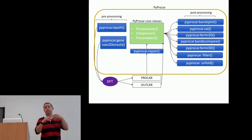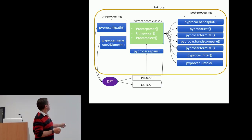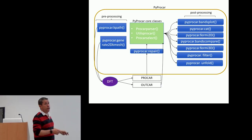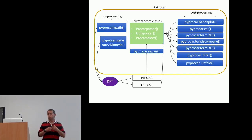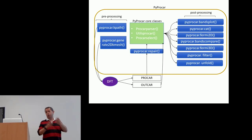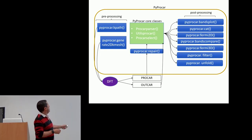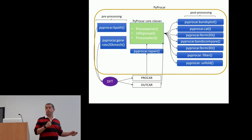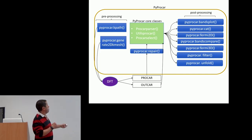We have a very simple input to create the k-path, meaning you can do the band structure analysis. Because we have also implemented the Fermi analysis for two dimensions, you also have to generate the mesh to help users do something very simple. We have a parser that reads the information from the PROCAR, and after that we can do the plotting of whatever you are interested in.